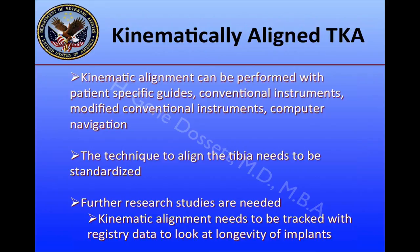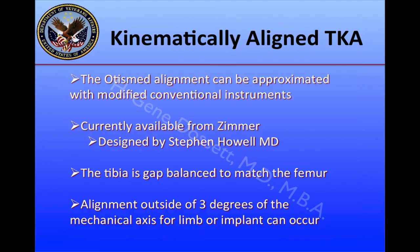What is the current state-of-the-art for kinematically-aligned total knee arthroplasty? Kinematic alignment can be performed with patient-specific guides, conventional instruments, modified conventional instruments, or computer navigation. The key is to understand the principles behind kinematically-aligned total knee arthroplasty. We still need a technique that aligns the tibia and is standardized across different platforms, and further research is needed — kinematic alignment needs to be tracked with registry data to look at the longevity of the implants. The OtisMed alignment can be approximated with modified conventional instruments, currently available from Zimmer, designed by Stephen Howell, MD. The tibia is gap-balanced to match the femur, and alignment outside of three degrees of the mechanical axis for the limb or the implant can occur.